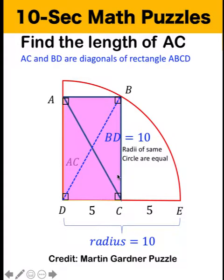Then from the figure, we know that AC and BD are diagonals of rectangle ABCD. And so we can now say that AC, which is the line segment that we want to find the length of, is equal to the length of segment BD because diagonals of a rectangle are equal.